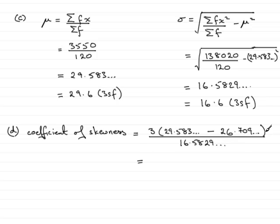And again, if you work this out on your calculator, what you should find is that you get 0.5199 and so on, which to three significant figures is 0.520 to 3SF.